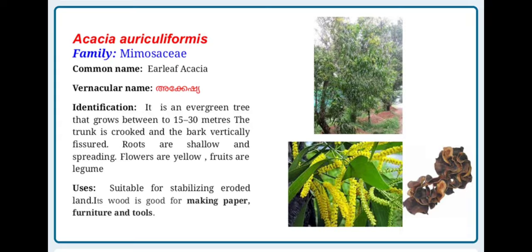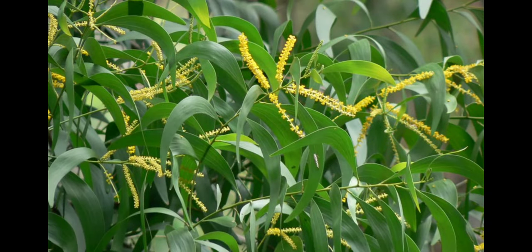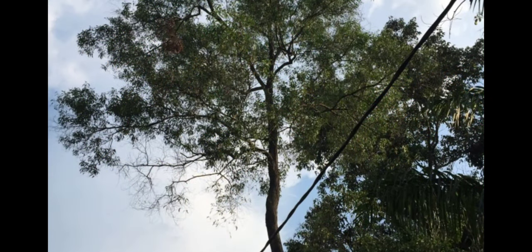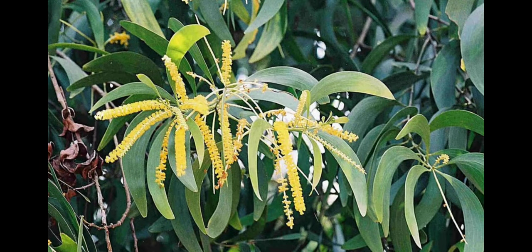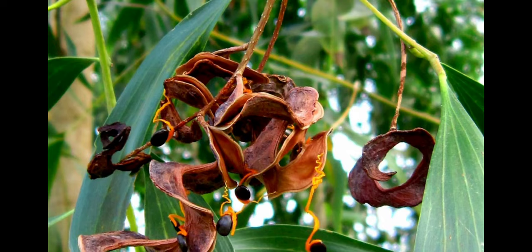Acacia auriculiformis, family Mimosaceae. Common name is earleaf acacia and its vernacular name is acacia. It is an evergreen tree that grows between 15 to 30 meters. The trunk is crooked and the bark is vertically fissured. Roots are shallow and spreading. Flowers are yellow and fruits are legume. Suitable for stabilizing eroded land, its wood is good for making paper, furniture and tools.